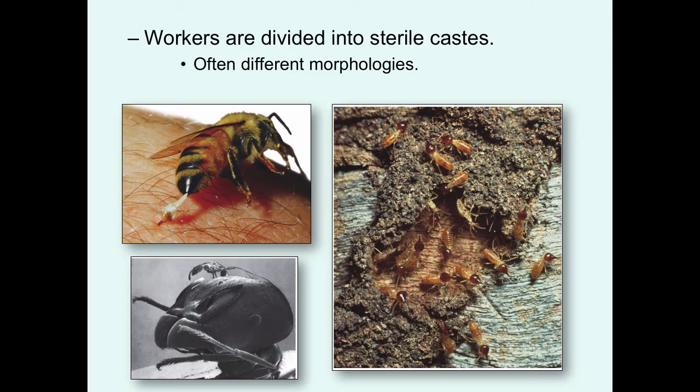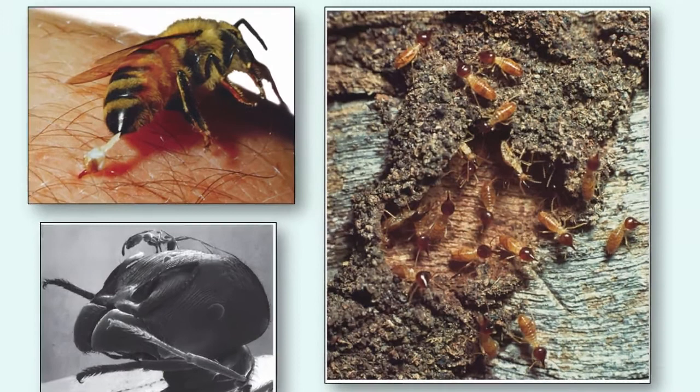What makes eusociality different? In eusociality, the workers are divided into sterile castes. They're not just biding their time until they can become reproductive. In this situation, these individuals do not have the capability of direct reproduction.